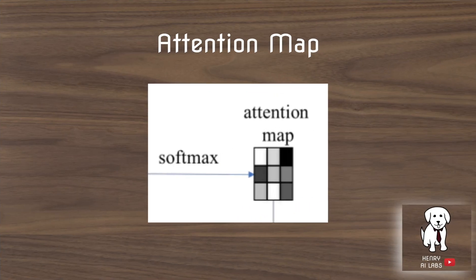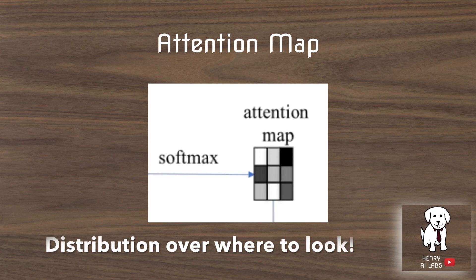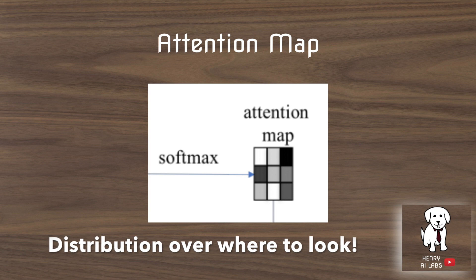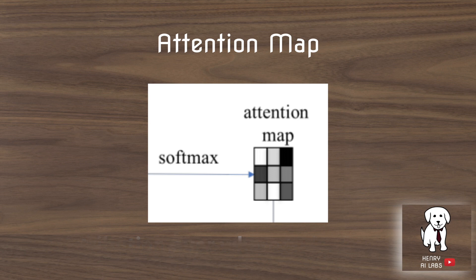To revisit the key idea of the attention map: the attention map is a softmax distribution over which features the attention layer should look at for conducting these features for the ultimate task of generating images. This is the most interesting part of this presentation.